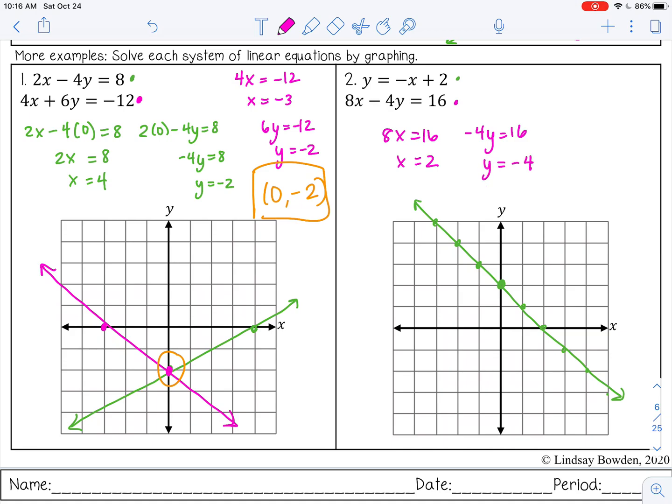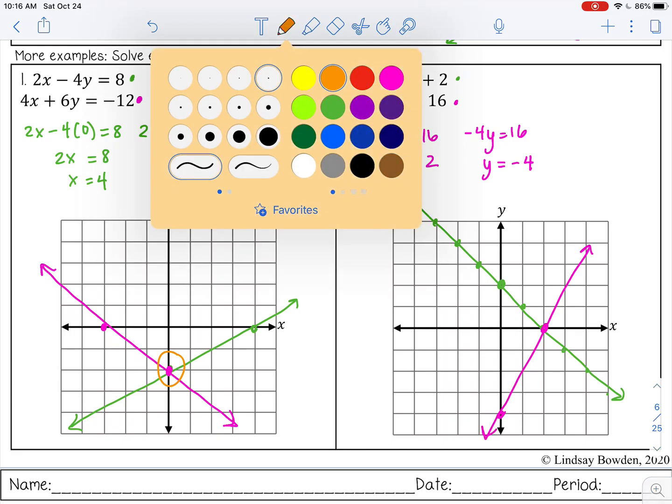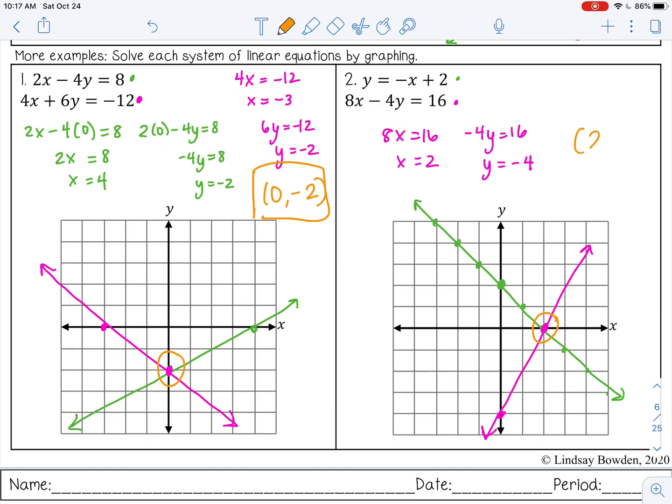That's negative four, so x equals two, y equals negative four. My solution is here at two, zero.